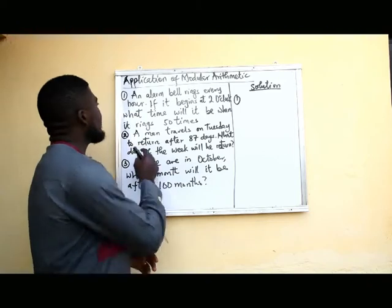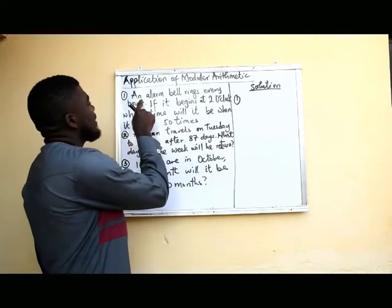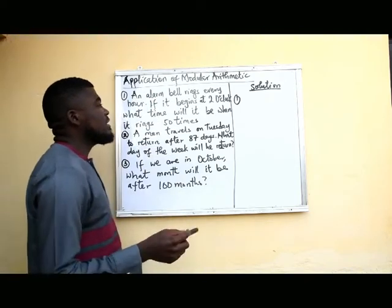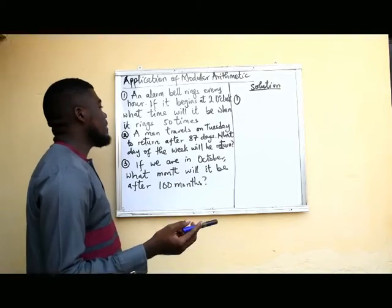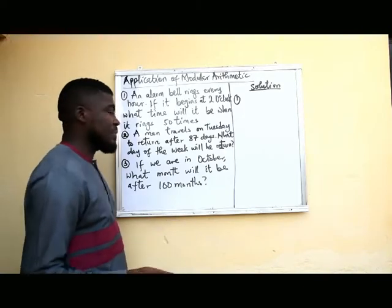The first question: an alarm bell rings every hour. If it begins at 2 o'clock, what time will it be when it rings 50 times?